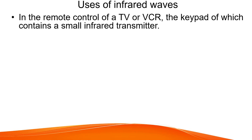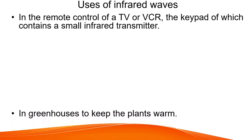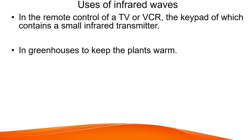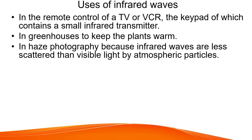Infrared waves are used in TV and VCR remote controls — the keypad contains a small infrared transmitter. They are used in greenhouses to keep plants warm. In haze photography, infrared waves are used because they are less scattered than visible light by atmospheric particles, allowing clearer imaging in fog conditions.